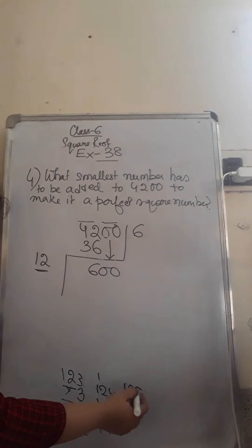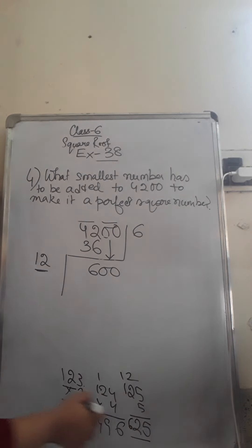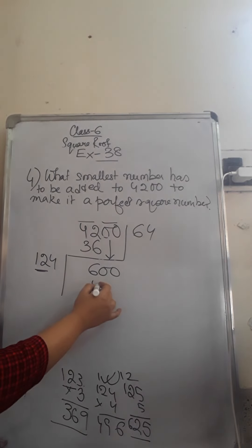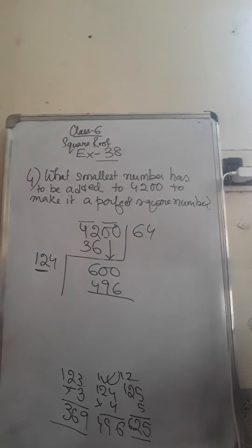So let us try with 125 also. 5 times 5 is 25. So 125 into 5 gives you a higher number. You cannot take. So you will take 124 into 4. That gives you 496.